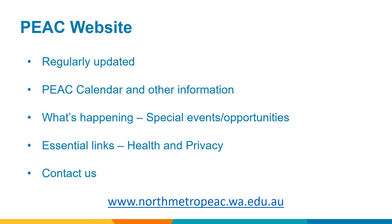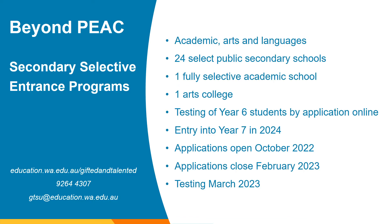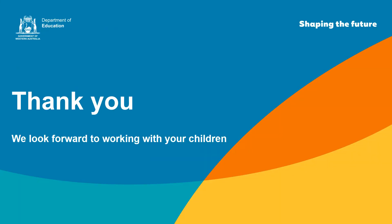The PIAC website provides access to important information. It is regularly updated and contains the PIAC calendar and key dates. It provides information about upcoming events and any special courses or opportunities that are available. There are also essential links on the website such as the option to update health and privacy information. Finally, here are some details about Western Australia's government schools secondary selective entrance programs. The dates here are relevant to students joining the PIAC program as year fives in 2022. Thank you for listening to the presentation — we look forward to working with your child.